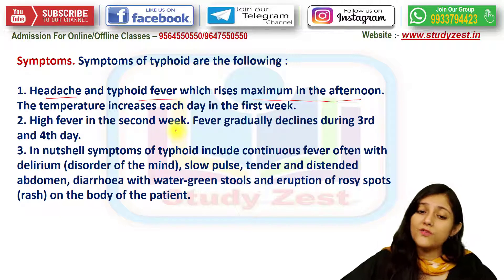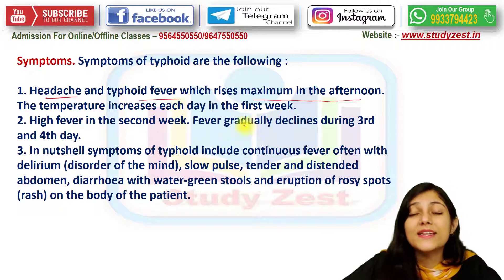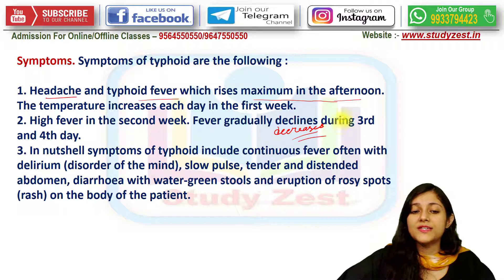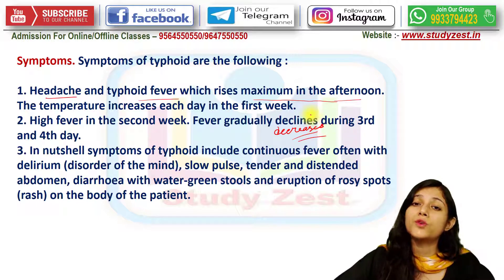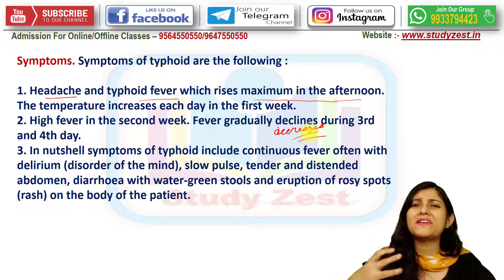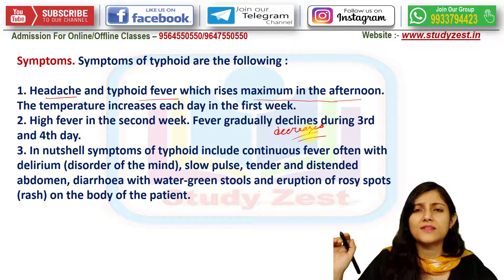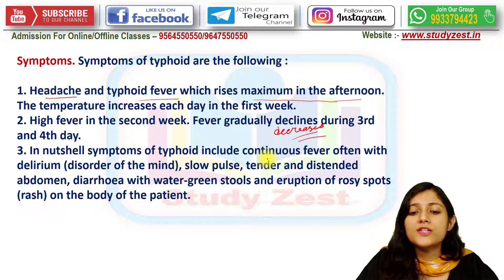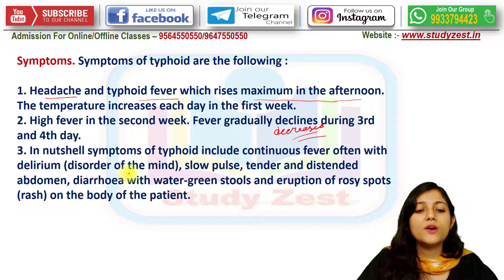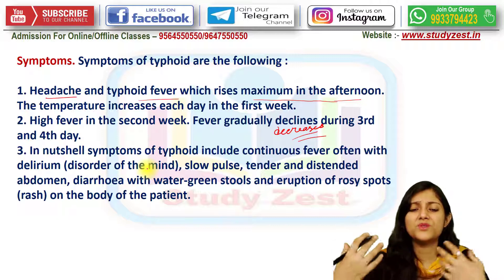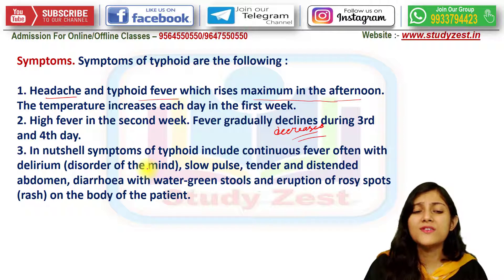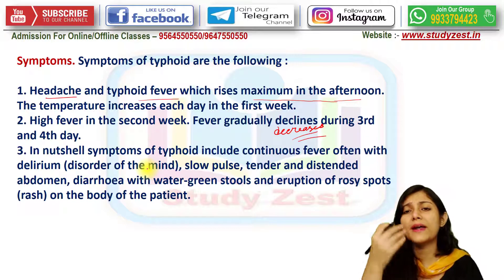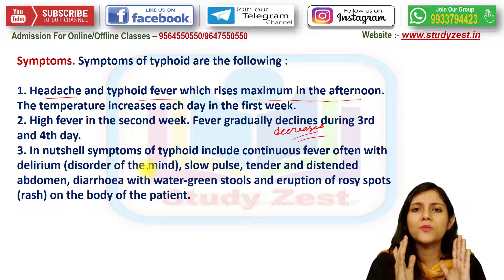High fever continues in the second week and then gradually declines during the third and fourth weeks. This is the pattern of fever rising, staying high, and then falling. In summary, symptoms of typhoid include continuous fever, often with disorder of the mind — mental disturbance — because even a slight fever affects our ability to think clearly.